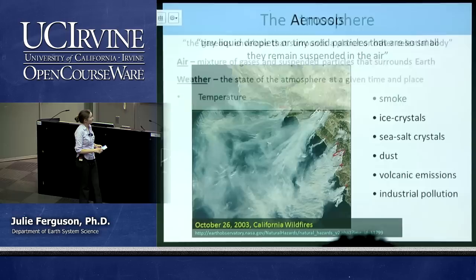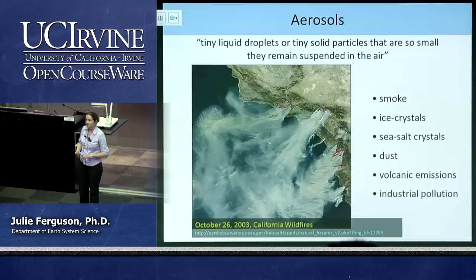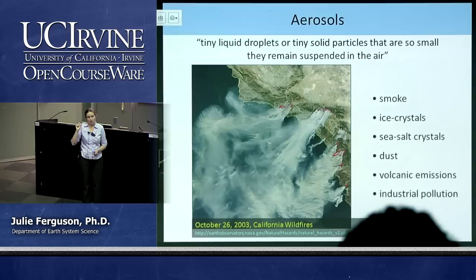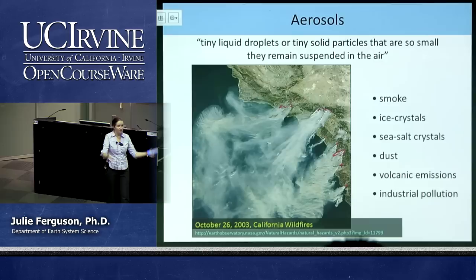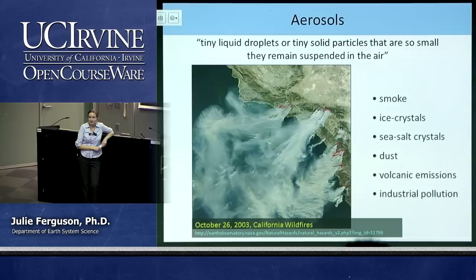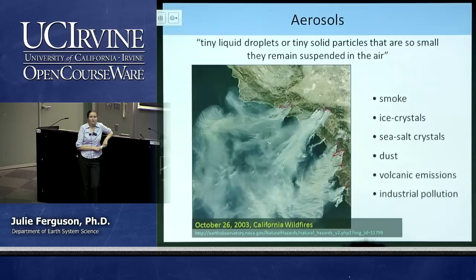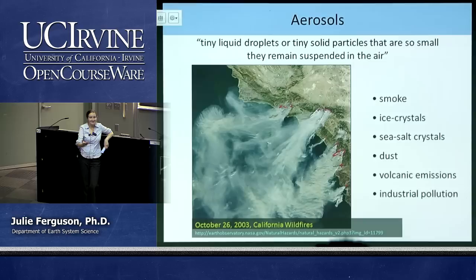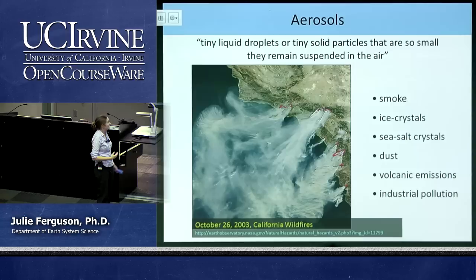When I talk about those little suspended particles, we have a specific name for them: aerosols. These are tiny liquid droplets or solid particles so small that they stay suspended in air — the movement of the air keeps them from falling to the ground, at least for a while. Sources include smoke from forest fires. You can see a satellite image of fires in the area from around 2003, showing Santa Ana winds — that dry inland air going out to sea. We tend to see fires with Santa Ana winds, and we'll talk about why those winds are so hot and dry.